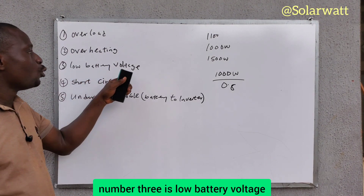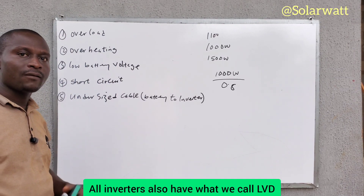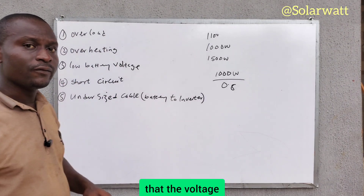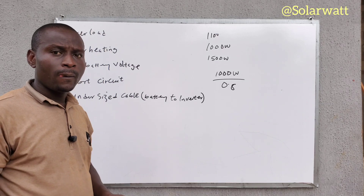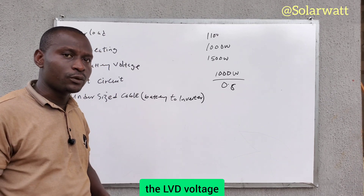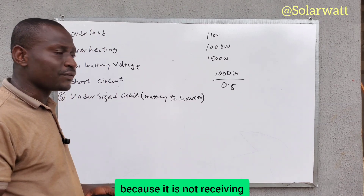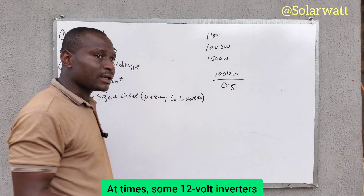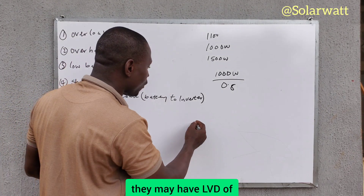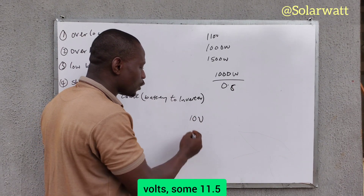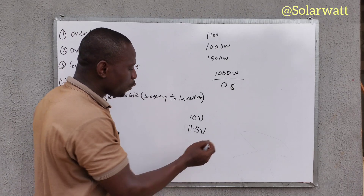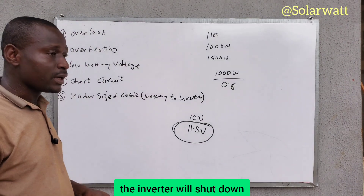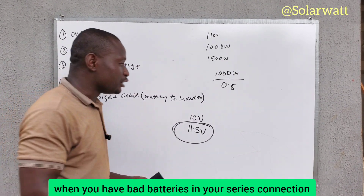Number three is low battery voltage. All inverters have what we call LVD — low voltage disconnect. Once the inverter senses that the input voltage from your battery bank has reached the LVD threshold, the inverter will shut down because it is not receiving the required voltage to operate efficiently. For example, some 12-volt inverters have an LVD of around 10 volts or 11.5 volts. Once the battery bank drops to 11.5 volts, the inverter will shut down. This often happens when you have a bad battery in a series connection.